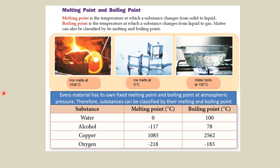For melting point and boiling point: melting point is the temperature at which a substance changes from solid to liquid — for example, ice melts at 0 degrees Celsius. Boiling point is the temperature at which a substance changes from liquid to gas — for example, pure water boils at 100 degrees Celsius. Every material has its own fixed melting point and boiling point at atmospheric pressure. Therefore substances can be classified by these values. For example, copper has a melting point of 1085°C and a boiling point of 2562°C. Oxygen has a melting point of −218°C and a boiling point of −183°C.